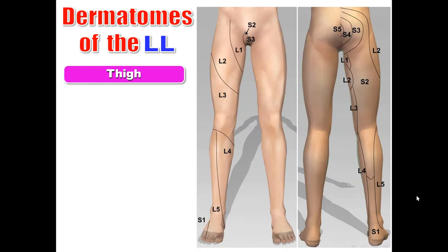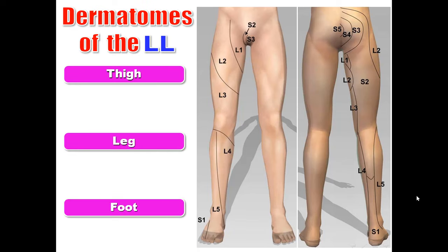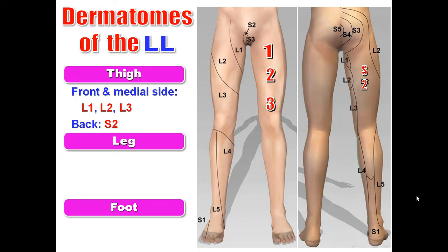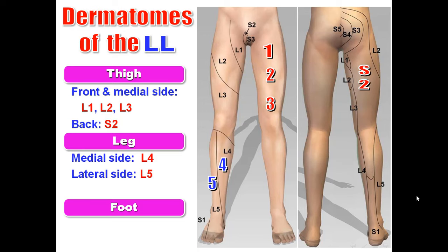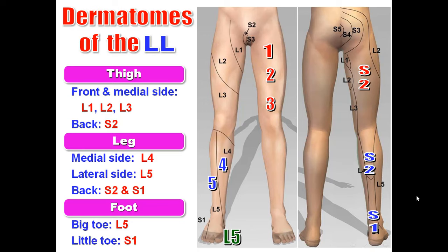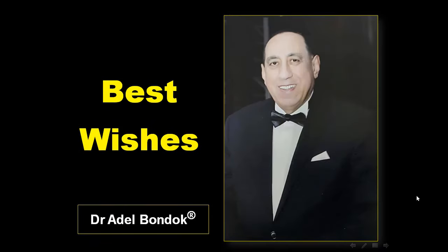Lesion of the superficial peroneal nerve causes only paralysis of peroneus longus and peroneus brevis, leading to loss of eversion — no foot drop, because the dorsiflexors are intact. Regarding the dermatomes of the lower limb: on the front and medial side of the thigh, L1 is the upper part, L2 the middle, and L3 the lower. The back of the thigh is S2. For the leg: medial side is L4, lateral side is L5, the back upper part is S2 and lower part is S1. For the foot: the big toe is L5 and the little toe is S1. These dermatomes are very important in neurological examination to examine the sensory system. Thank you very much, best wishes and good luck.